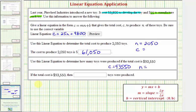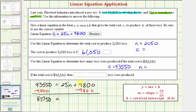So we have 93,550 equals 25N plus 9,800. So we want to subtract 9,800 on both sides. That would give us 83,750 equals 25N. So to solve for N, we divide both sides by 25.